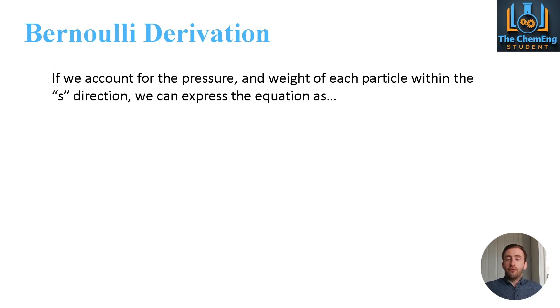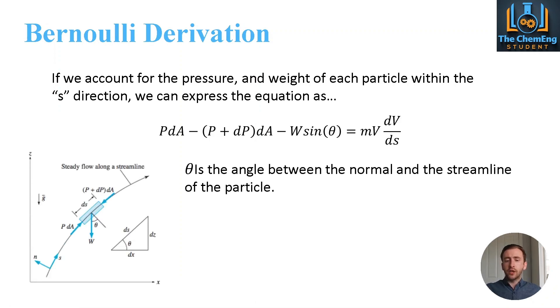So if we don't assume linear behaviour, then this equation simply will not stand. Now the reasons why is well outwith the scope of this tutorial. But if we account for the pressure and the weight, so when we model this, we're going to consider the pressure and the weight of each of the particles. Now S is the direction of flow. So what we can do here is we can express the equation as follows. Now you might be asking how on earth did we create this equation? Where did it come from?